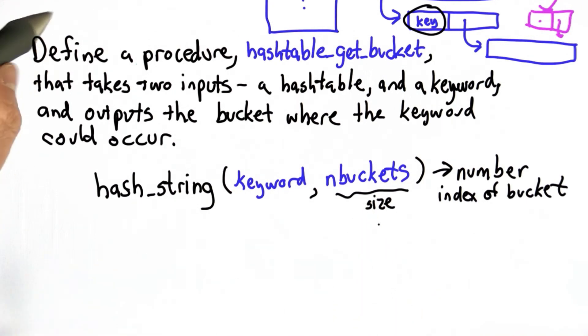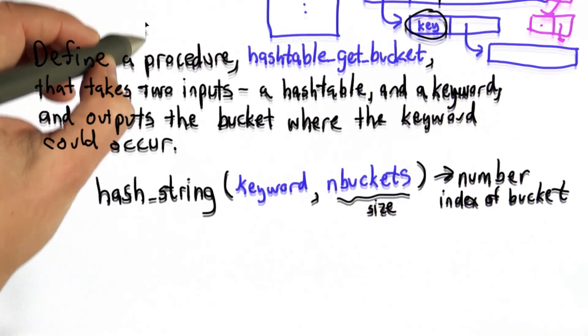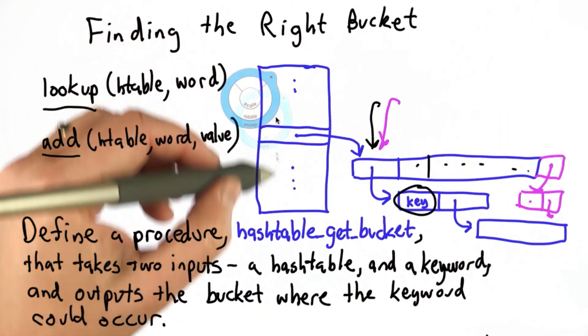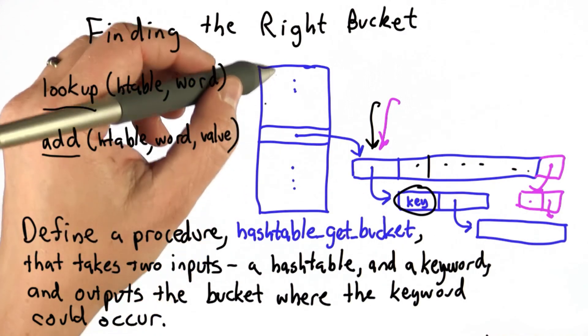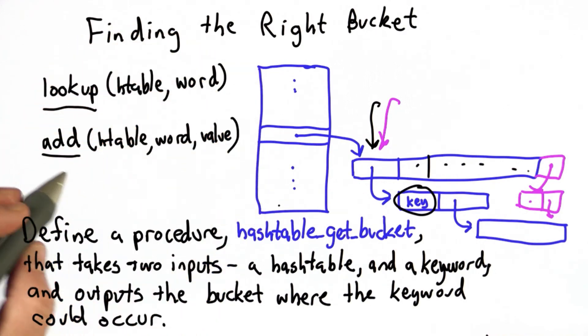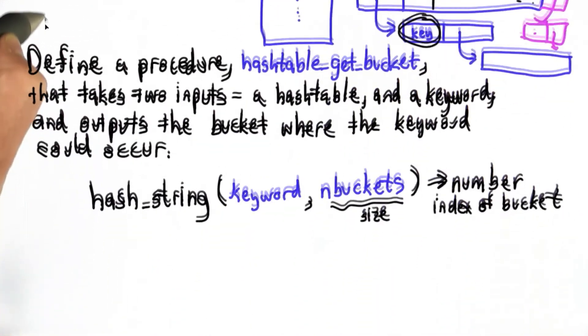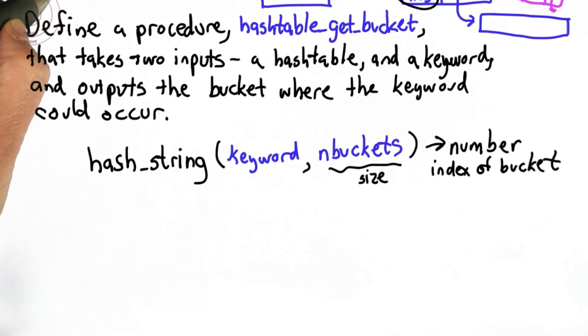If you remember the structure of the hash table, you should be able to figure out how to do that. Remember, our hash table is a list of buckets, so the value we want to pass into hash_string is the size of that hash table—the number of elements in the list of buckets that is the hash table. See if you can define hashtable_get_bucket.